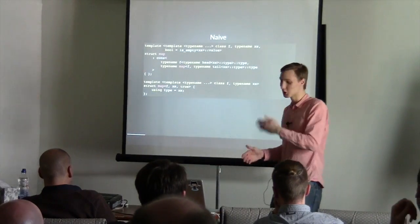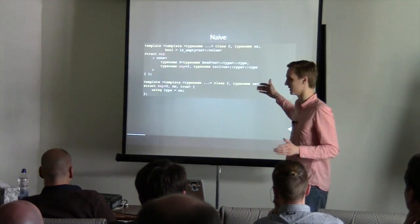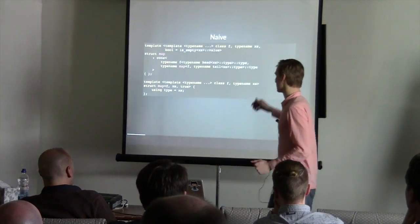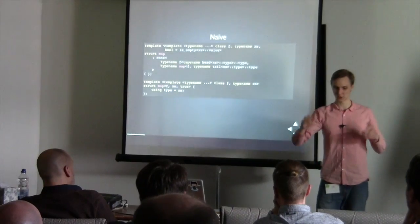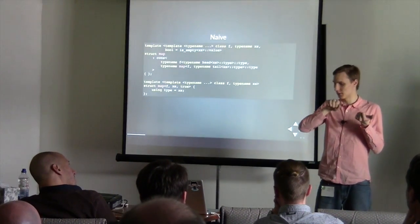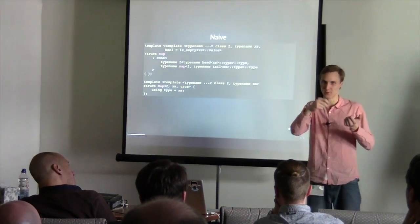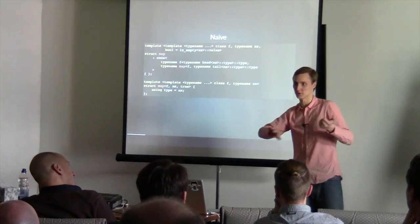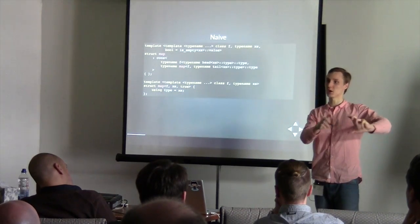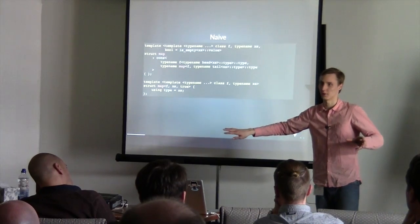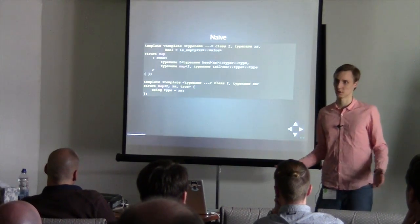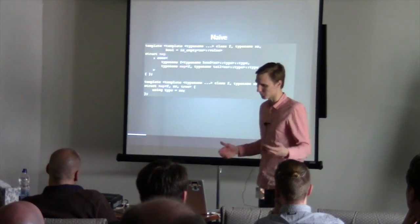You could have a C++03 implementation of this, but it would be more ugly. The naive implementation simply takes the first element in the list, maps the metafunction on the tail of the list, applies the metafunction on the first element and conses that to the tail. And if the list is empty, well obviously it returns the empty list. So that's a basic recursive approach — what we would do in C++03.